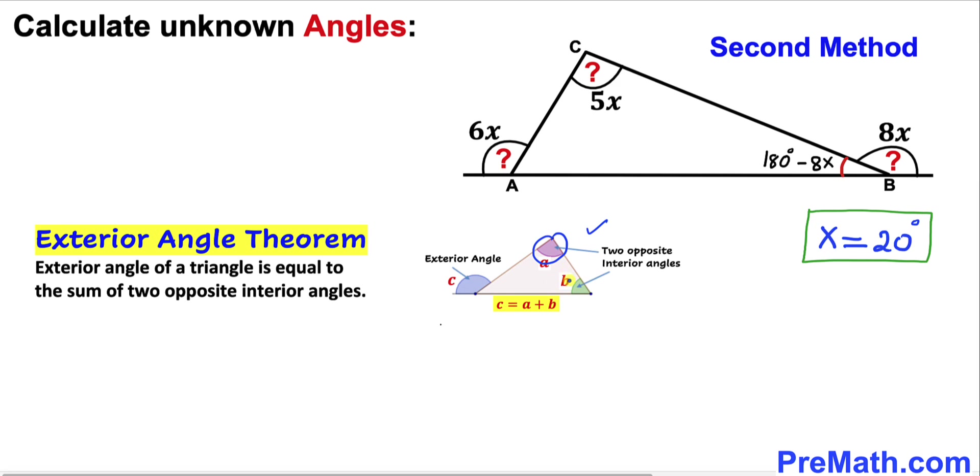As you can see in this diagram, these are our two opposite interior angles and this is our exterior angle such that c equals a plus b.